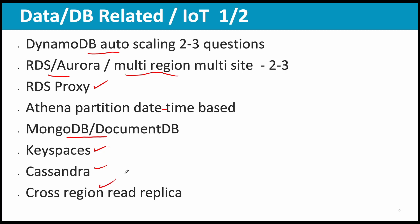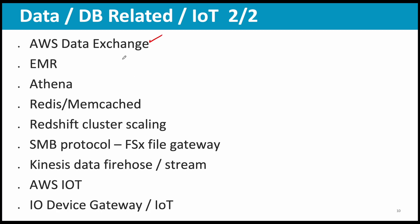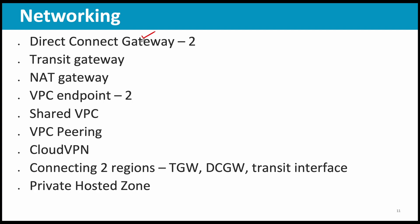Cross-region replication, Data Exchange, EMR, Redis, Memcached, Redshift cluster scaling, SMB protocol, Kinesis Data Firehose, Kinesis Streams, IoT, and IoT Device Gateway all had related questions. For networking, be thorough with Direct Connect Gateway — there were a couple of questions. Transit Gateway, NAT Gateway, and VPC Endpoint definitely had a couple of questions each.